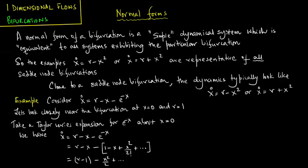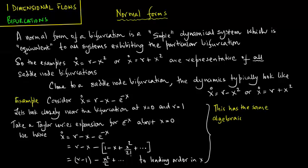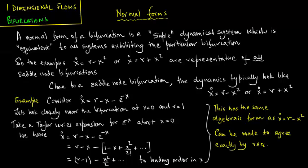This equation, to leading order in x, has the same algebraic form as x_dot = r - x², and in fact can be made to agree exactly by rescalings of r and x.